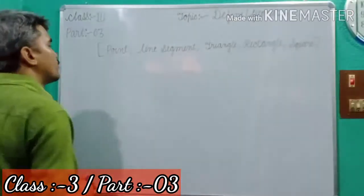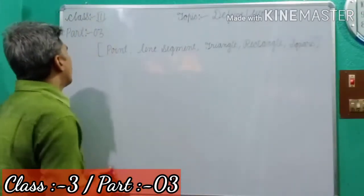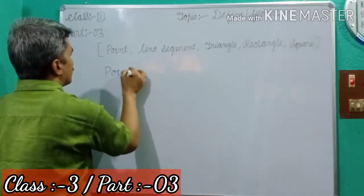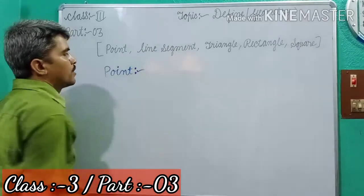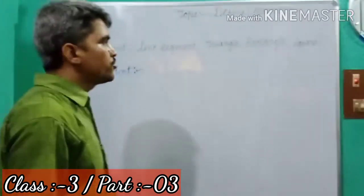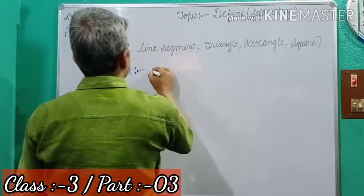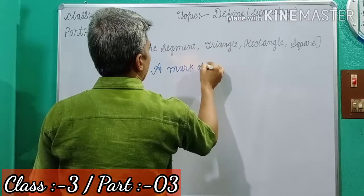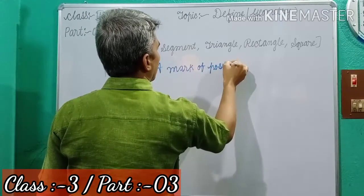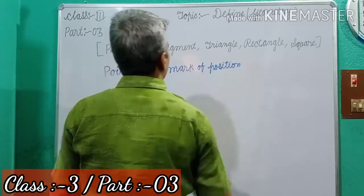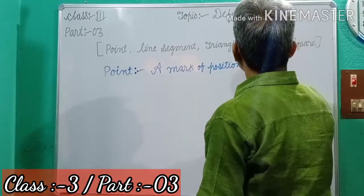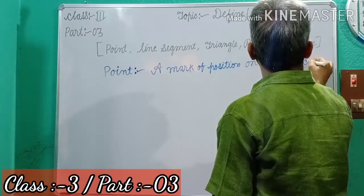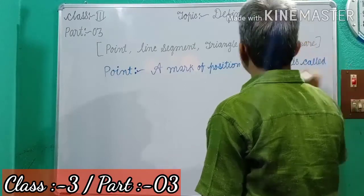Discuss today's topics. First of all, what is point? A mark of position on plane is called point.